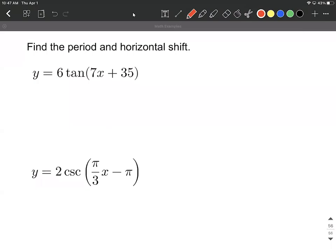All right, let's calculate the period and the horizontal shift when we have a few trigonometric functions. So on the first one, we have y equals 6 tangent of 7x plus 35.